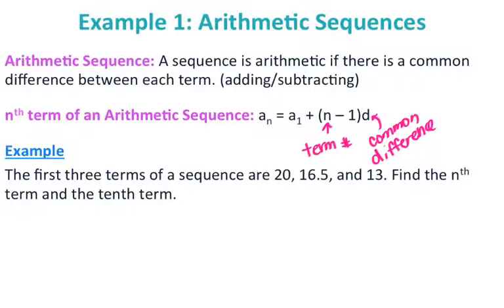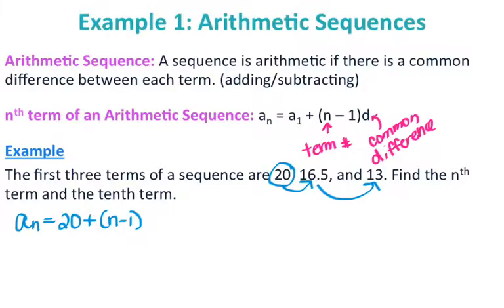The first three terms of a sequence are 20, 16.5, and 13. Find the nth term and the 10th term. Finding the nth term means finding the formula for the sequence. Starting with a_n equals my first term, which is 20, plus (n minus 1) times my common difference. To find the common difference, I look at the pattern from 20 to 16.5 to 13. Taking the second term minus the first term gives a common difference of negative 3.5, and subtracting 3.5 from 16.5 confirms we get 13.